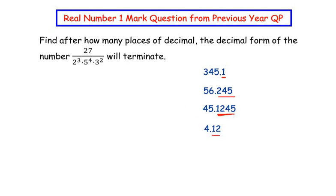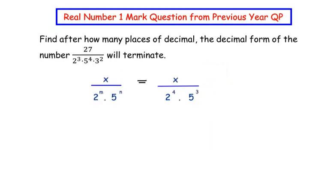For a number to be terminating, we should have only powers of 2 and powers of 5 in the denominator. Here I have considered a fraction with the numerator written in general as x and in the denominator I have taken 2^m × 5^n.